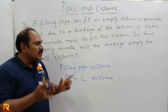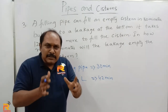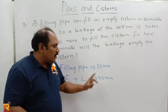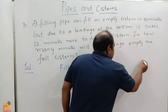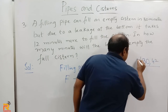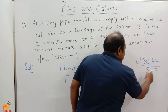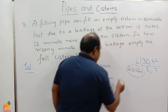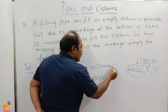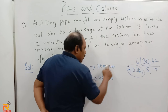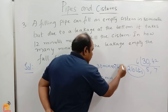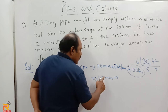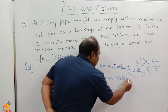We will solve this question using LCM. The LCM of 30 and 42: 6 × 5 = 30 and 6 × 7 = 42, so LCM = 210. Let us assume the total capacity of the tank is 210 liters. The filling pipe fills 210 liters in 30 minutes, so per minute it fills 210 ÷ 30 = 7 liters per minute. The filling pipe along with the leakage fills 210 liters in 42 minutes, so per minute it fills 210 ÷ 42 = 5 liters per minute.